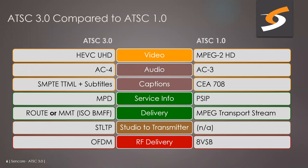The next slide is a side-by-side comparison of ATSC 3.0 versus ATSC 1.0 characteristics. From a video perspective, ATSC 1.0 is MPEG-2 HD or SD, while ATSC 3.0 utilizes HEVC compression — H.265 — and supports resolution up to UHD. There are vast improvements between MPEG-2 and HEVC in terms of efficiency and other things that make it very useful for this new standard.